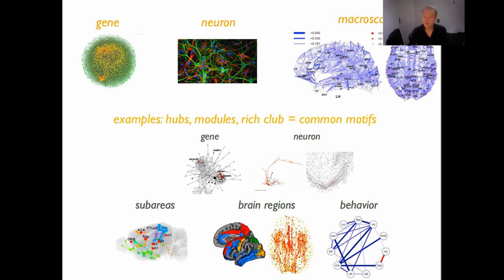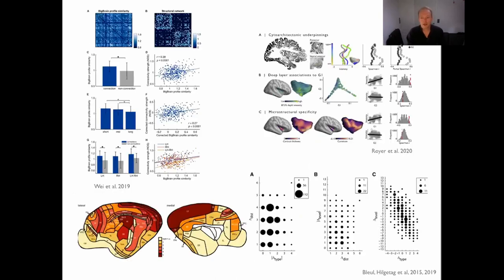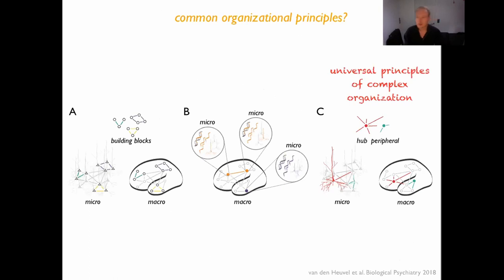It could well be that there are fundamental building blocks in nature that govern organization of complex systems regardless of scale. A second possibility — and it need not be one or the other — is that micro shapes macro, and perhaps also the other way around. This theory was nicely introduced by the Hilgetag group: 'connect to like' — cytoarchitectural similarity might help tracts to grow between brain regions and maintain those connections, such that micro-scale organization guides the macro-scale organization of the connectome.